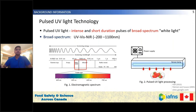For the focus of today I'll talk about pulse UV light technology. So what is pulse light — pulse UV light or PL? It is the application of intense and short duration pulses of broad spectrum white light. When I say white light, the wavelength range is from 200 nanometers, that is UV, to 1100 nanometers, that is infrared.